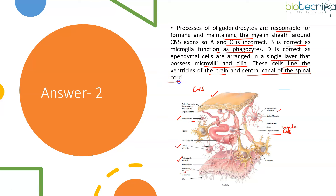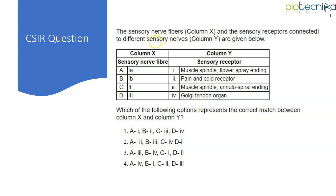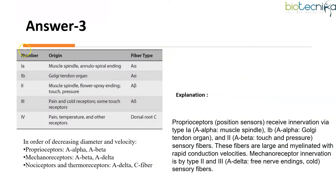The next question is a recent match-the-following type. Sensory nerve fibers in column X are to be matched with sensory receptors in column Y. The question asks which option represents the correct match between the two columns. This depends on how well you have memorized the different nerve fibers and their associated receptors.